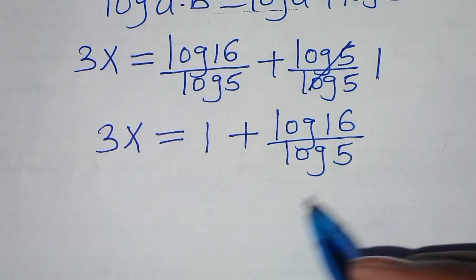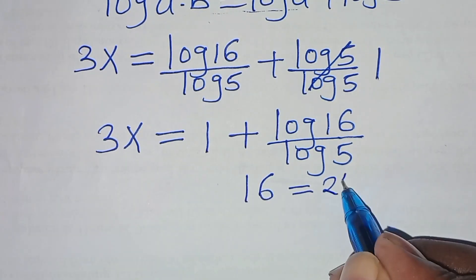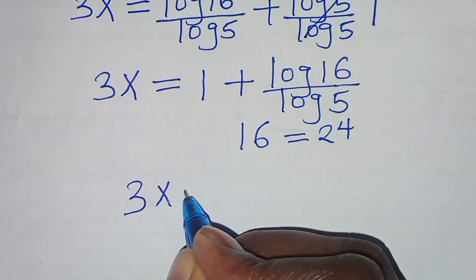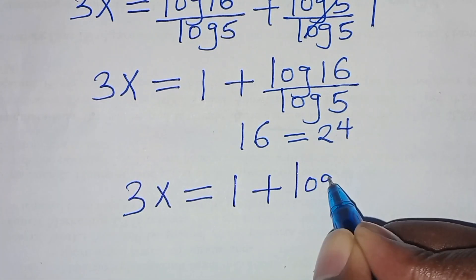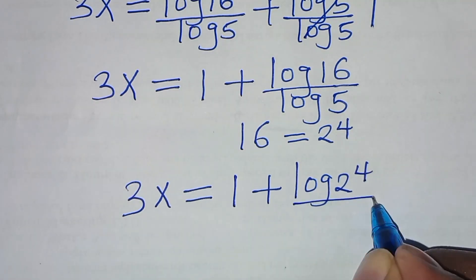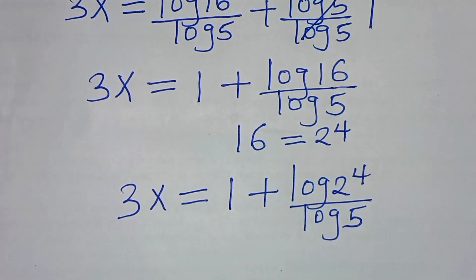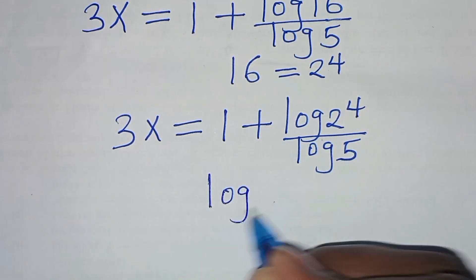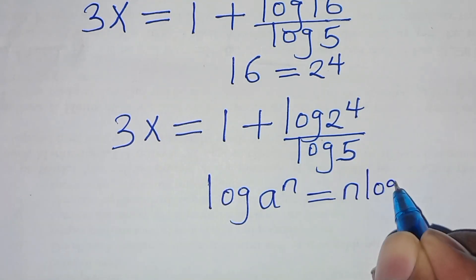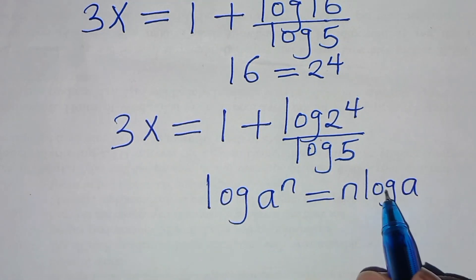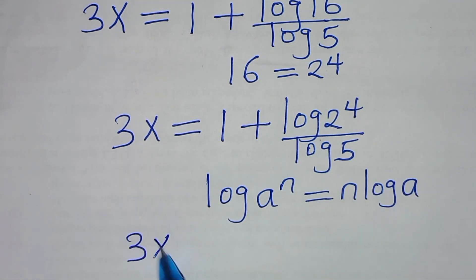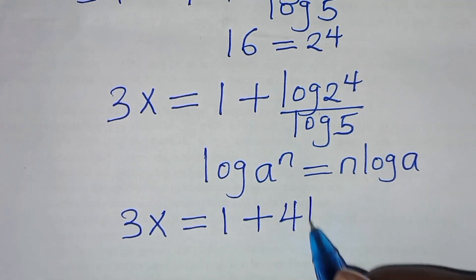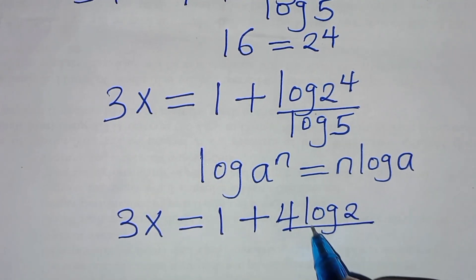The next step is that we can express 16 as 2 to the power 4. So this therefore implies that 3x equals 1 plus log of 2 to the power 4, divided by log 5. The next step is that log of 2 to the power 4 is in the form of n log a, so applying this power property, 3x equals 1 plus 4 log 2, divided by log 5.